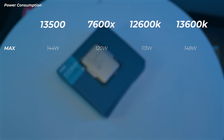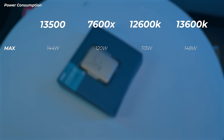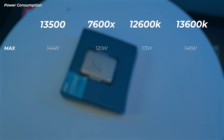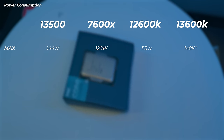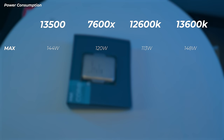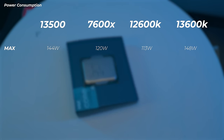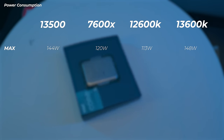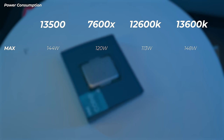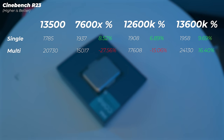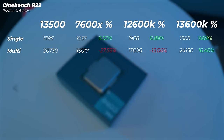Looking at power consumption, the 13500 is only four watts less than the 13600K but delivers noticeably slower performance. It pulls more wattage than the 7600X due to having more cores. The 12600K is the most efficient CPU of this group.